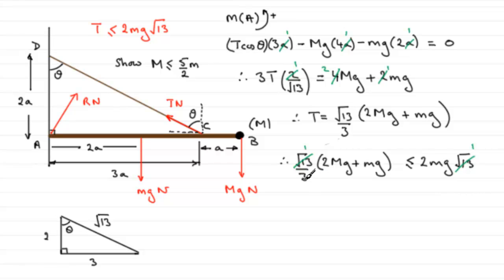And so, if we multiply it now through by the 3, it leaves us with 2Mg, big M there, plus the little mg, is less than or equal to 6mg, if we times this by 3.